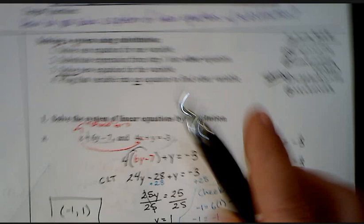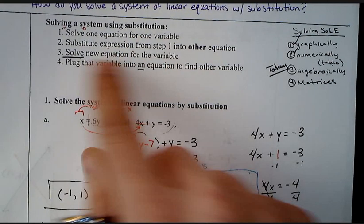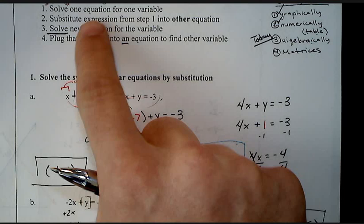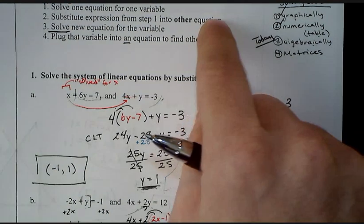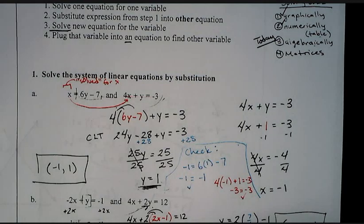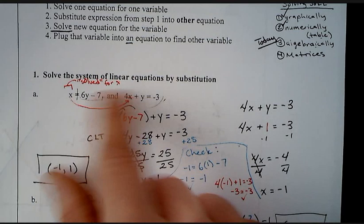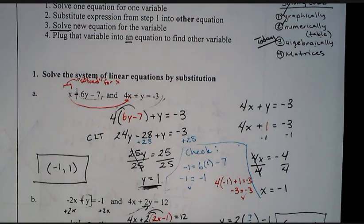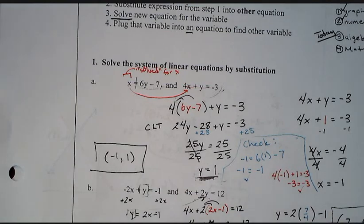All right. To summarize. Follow these four steps. Solve for one equation, for one variable. Substitute it back into the expression from step one into the other equation. We want to actually solve the new equation for the variable. And then lastly, plug that variable back into either one of your originals to find the other variable. Again, if you have any questions, write them down. Bring them in. Other than that, have a great day.